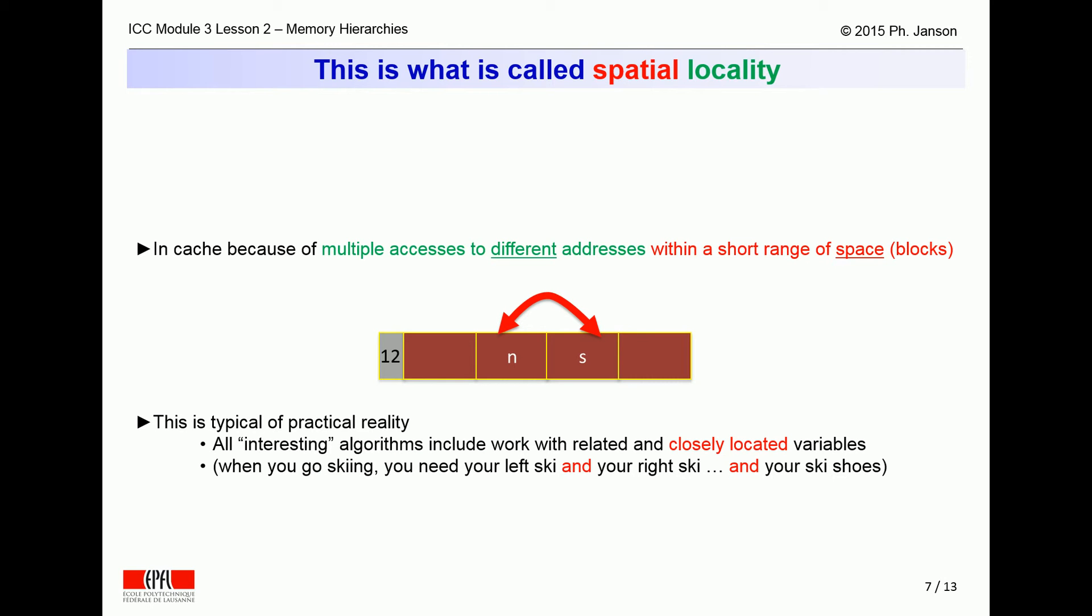All realistic programs, like the integer sequence addition program of our example, use many variables that are always located closely together by the compiler. The same happens during a day of winter sports, where people using their left ski will typically use their right ski at the same time, simply because the two belong together as part of the same program.